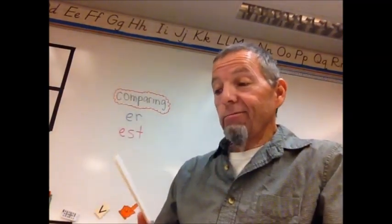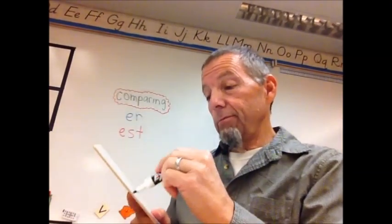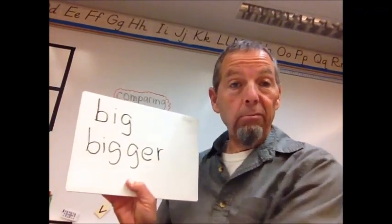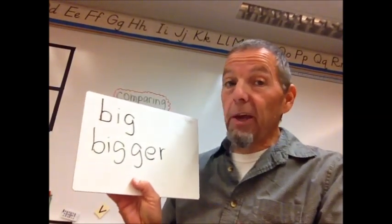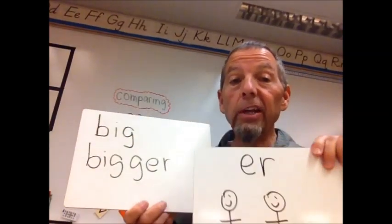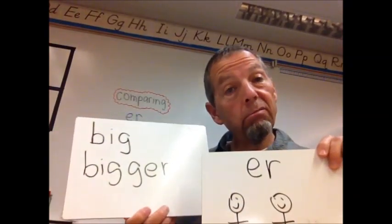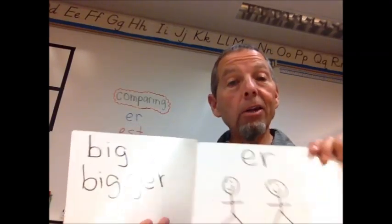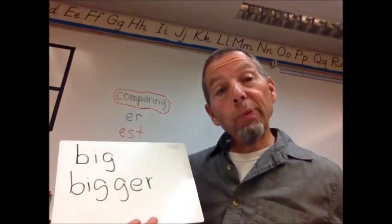And then your sister comes in. She's got a bigger pizza. Your first one was big. This one's bigger. It's bigger, so we're using ER. You see that? And we had to double the consonant, but still, we put ER to compare two things, two pizzas.